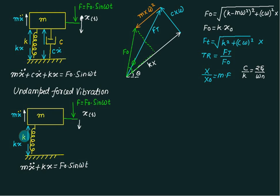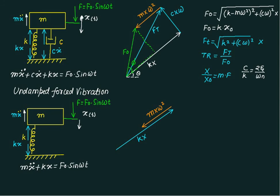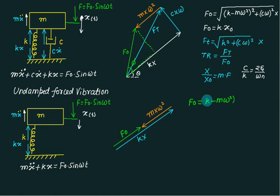When we have only these two forces in this system, our vector diagram will consist of — first, we will draw the spring force, and then on the same line I have to show my inertia force. You don't have to perform any Pythagoras — this is a simple vector solve. So the external value equals F0. We can say F0 simply equals K minus M-omega-squared, multiplied by X.